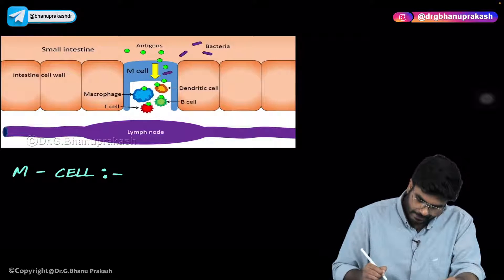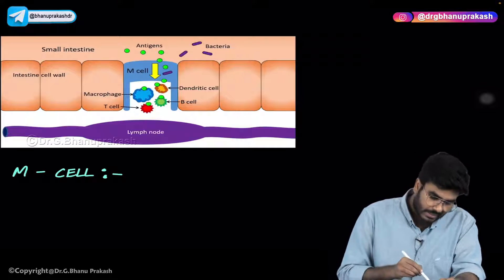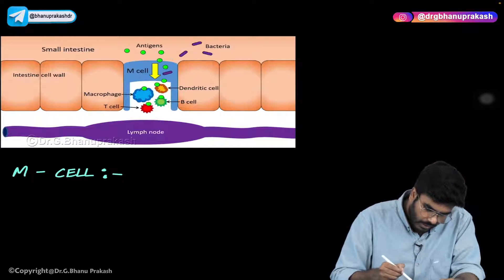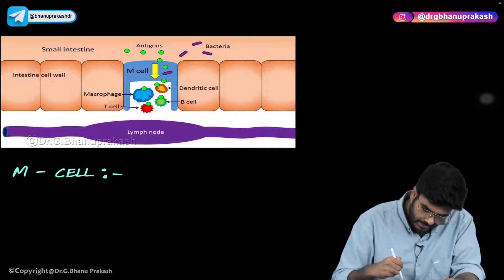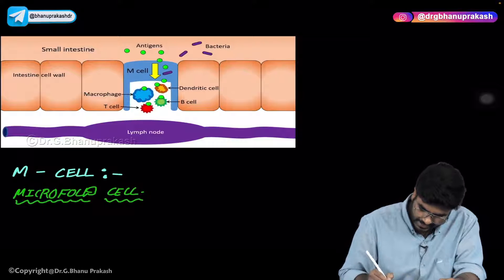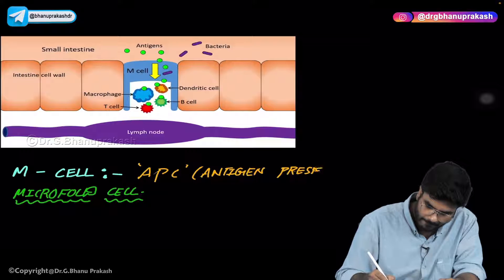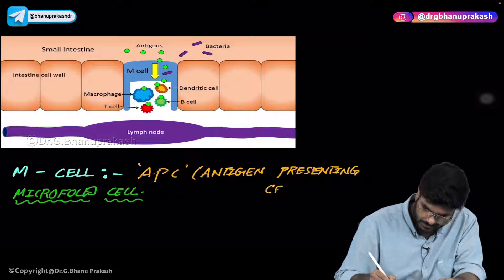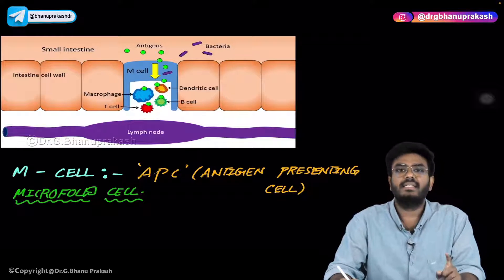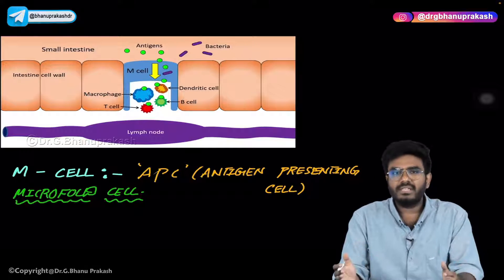Now let's talk about a cell called the M cell — this is an integration with pathology. What are M cells and where are they present? In the small intestinal wall, you can appreciate this blue-colored cell labeled as M cell. M cell is also called the microfold cell. The importance of the M cell is that it acts as an antigen presenting cell. So the antigen presenting cell in the small intestine is the M cell — one important MCQ to remember. I've made a few integrations from GI physiology with other subjects. Hope the video is helpful. Thank you.